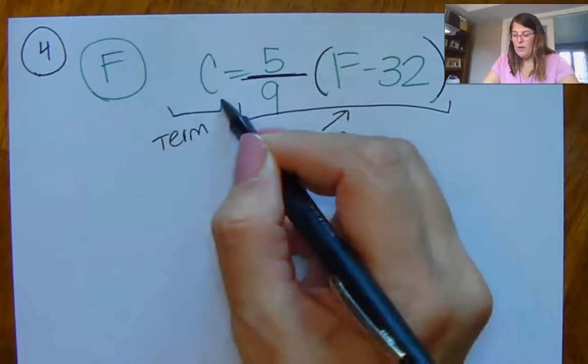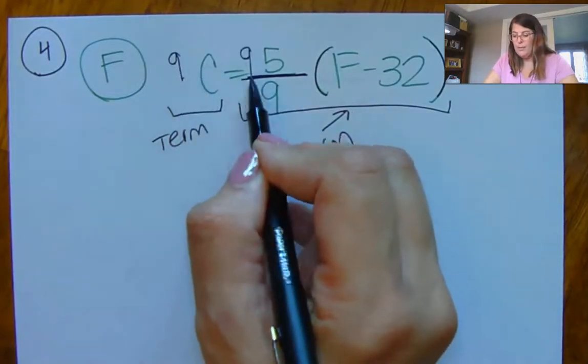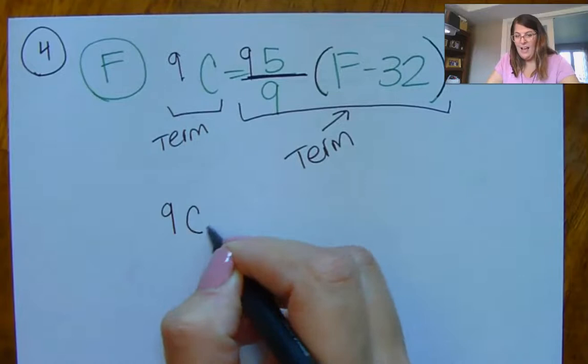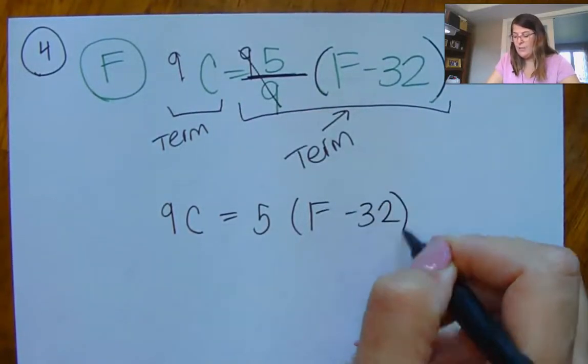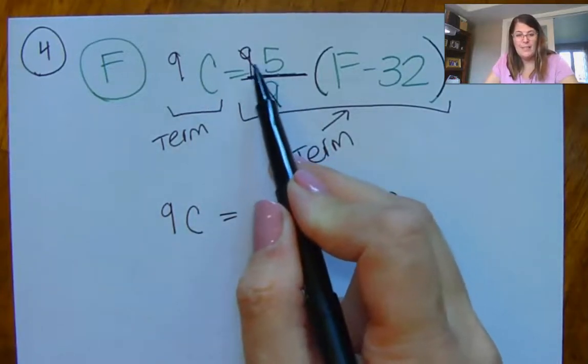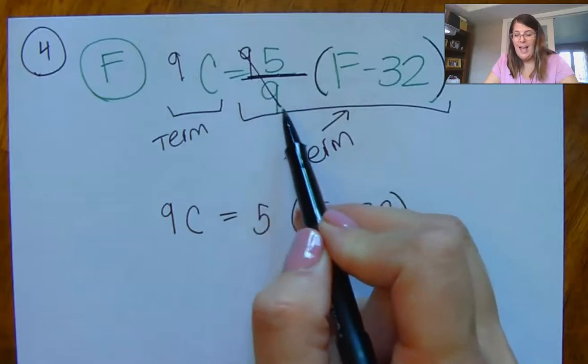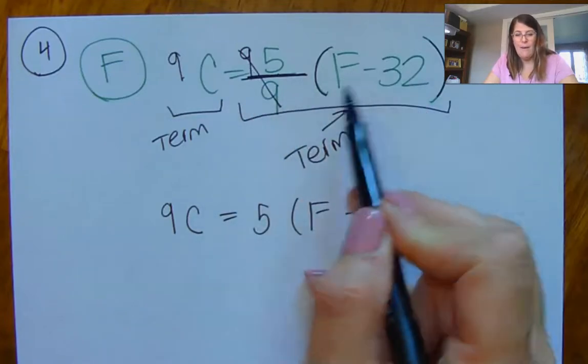So the first thing I want to do is I want to get rid of the fraction. So multiply both sides by nine. I have 9C equals five times F minus 32. So what happened here? I multiplied by nine, but a lot of times kids will multiply by nine and they do that to cancel, but then they think they have to multiply the F by this, the nine.